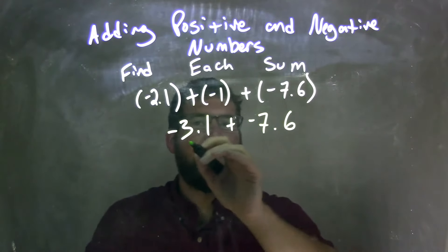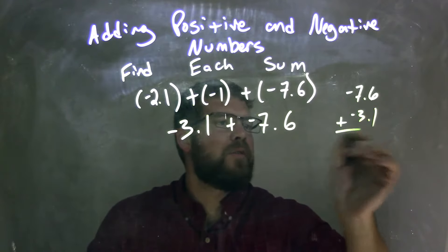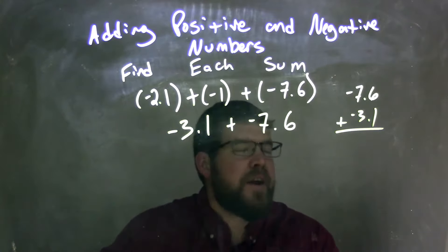If I want to add the negative 3.1 and negative 7.6, since they're both in a negative direction, you just add it like the positive numbers, just make the final answer negative.